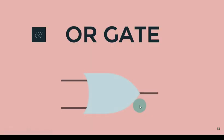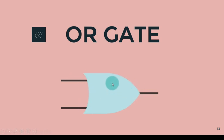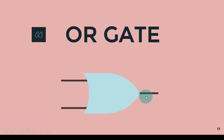The next gate is the OR gate. The symbol for the OR gate is curved on both sides — where the inputs are is curved, as well as where the output is. The OR gate takes in two inputs and produces a single output.